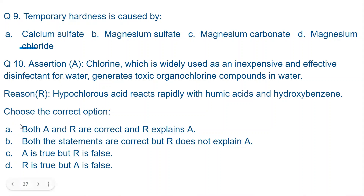The correct answer is option A — both A and R are correct and R explains A. The assertion is correct: chlorine generates toxic organochlorine compounds in water. The reason explains this: hypochlorous acid (HOCl) reacts quickly with humic acid (an organic compound) and hydroxy benzene, which are organic impurities present in water, forming toxic organochlorine compounds. So R correctly explains A.